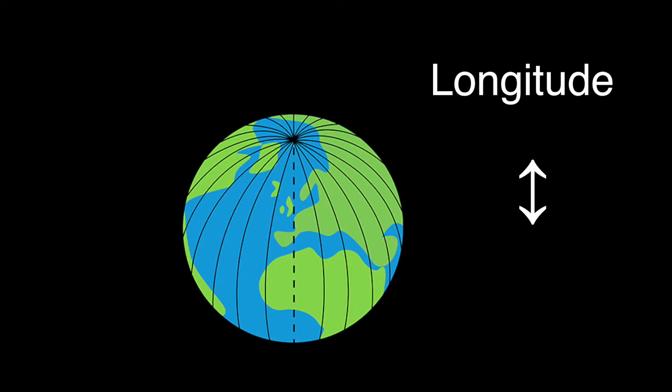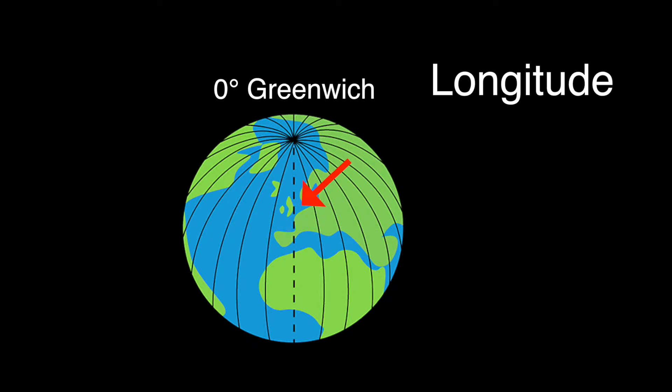Lines of longitude run north and south, and longitude is not evenly spaced — lines of longitude get closer at the poles. Zero degrees longitude is at Greenwich. East of Greenwich is E for east, and west of Greenwich is W for west.